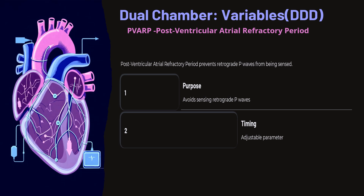The post-ventricular atrial refractory period (PVARP) is very important to prevent retrograde P waves from being sensed. The purpose of PVARP is to avoid sensing retrograde P waves, and its timing is an adjustable parameter.